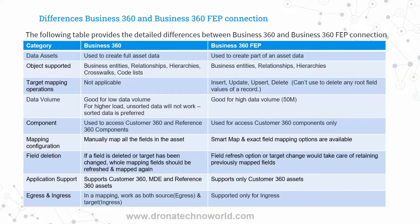For field mapping, you must manually map all fields for the FEP connector. For Business 360, smart map and exact field mapping features are available. For re-mapping: if a field is deleted or the target has changed, you have to remap all components when using Business 360 connection, whereas for the FEP connector it updates automatically — making it better from a development perspective. Application support: Business 360 supports Customer 360 multi-domain edition and Reference 360; Business 360 FEP connector only supports Customer 360 assets. For data ingress and egress, make sure you are not using both source and target in a single mapping for Business 360; FEP connector only supports ingestion.